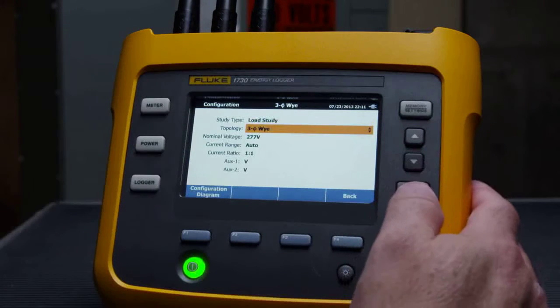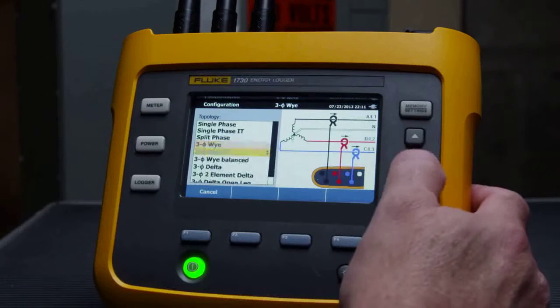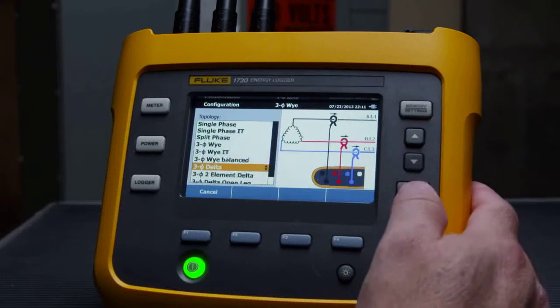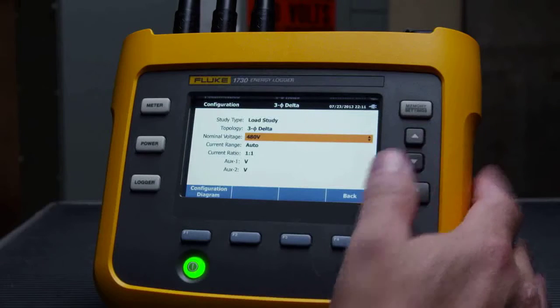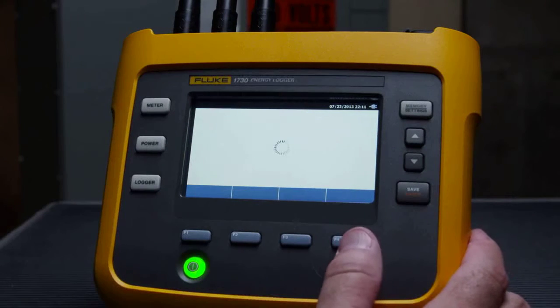Now choose Topology and select your circuit type from the list. Other settings, such as where the current and voltage transformers are installed, can be selected to ensure all measurements are shown correctly.